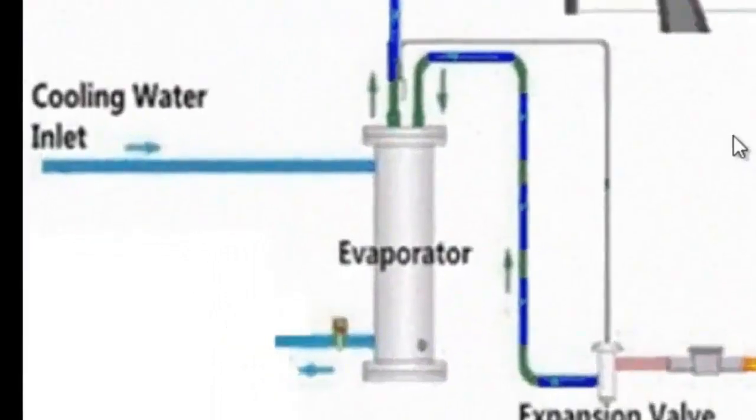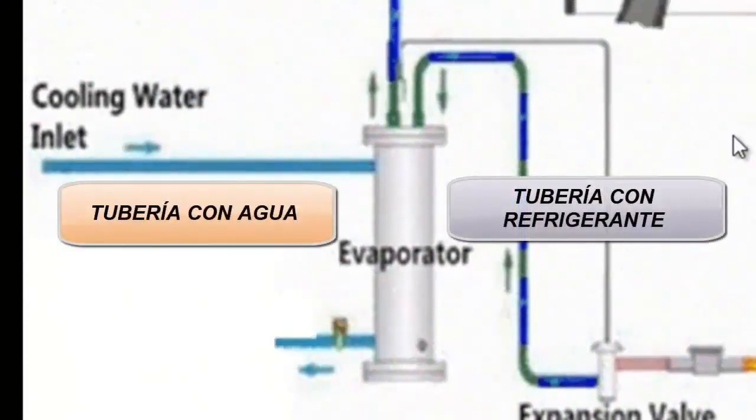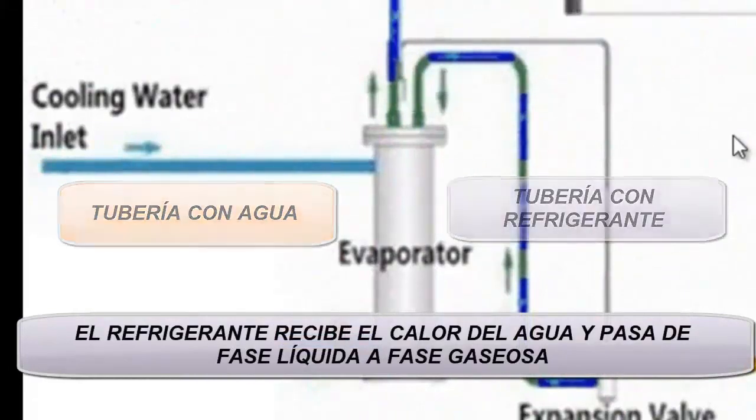1. Evaporator or cooler to cool the water. There the chiller refrigerant is cold due to low pressure, managing to generate ice water. The water and coolant from the chiller are in separate pipes. They never mix.